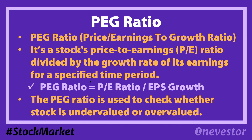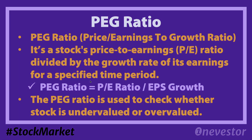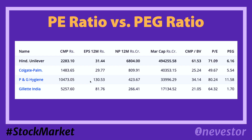If the PEG ratio is below 1, that is considered a fair or undervalued price. If it is above 1, that is overvalued. So if the stock's PEG multiple is more than others in the sector and we can't justify the stock price, that's the reason. For example, if the PEG ratio is 6, that's why the stock price is overvalued.